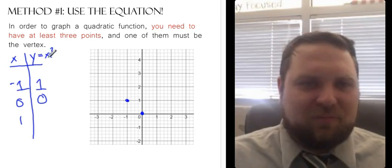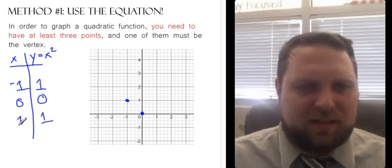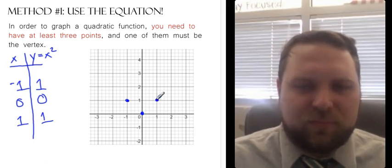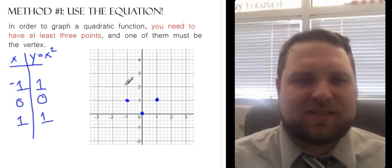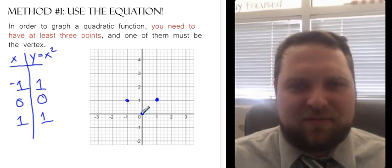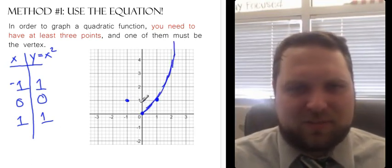We can also substitute in 1. 1 squared is 1. And so I now have three points. The vertex is one of those points. And that's enough for me to sketch out what this is supposed to look like.